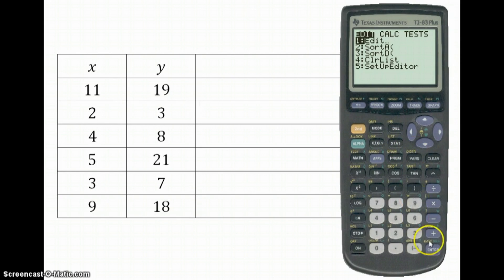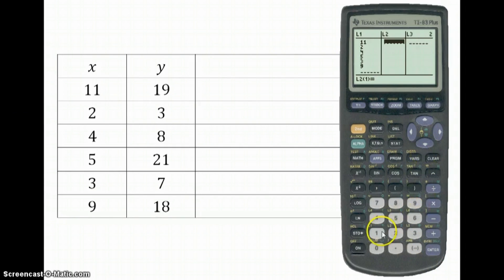So we're going to enter our numbers. Go to Stat. And then Edit. So we're going to enter our numbers into list 1. So 11, 2, 4, 5, 3, and 9. Then we go to the right. And we're going to enter the y values. So 19, 3, 8, 21, 7, and 18.